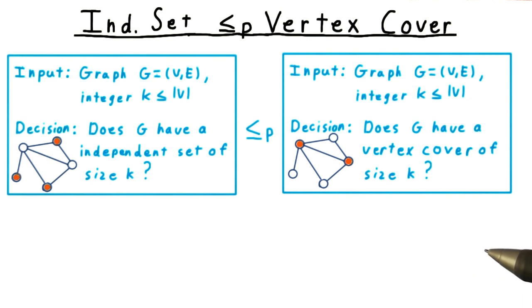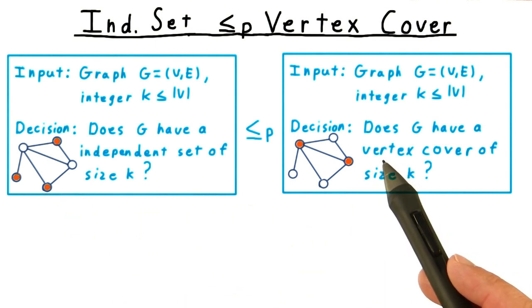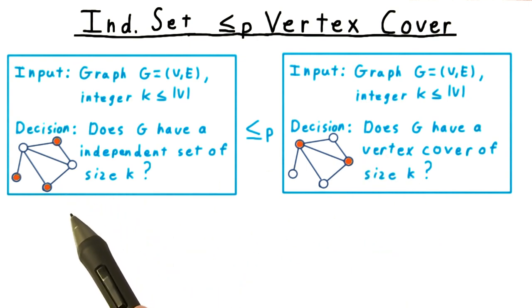Sometimes, however, it can be as simple as playing around with the definition. You'll notice that in both these examples here and in the exercises, the set of vertices used in the vertex cover was the complement of the vertices used in the independent set.